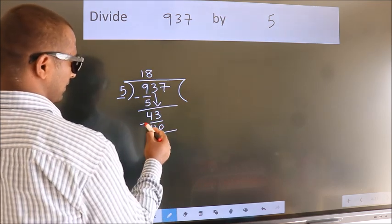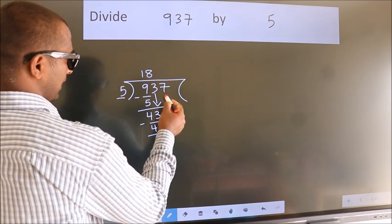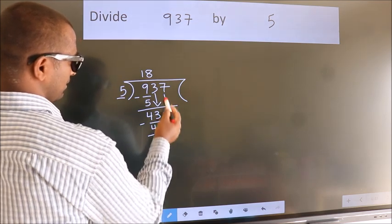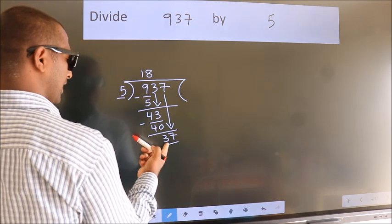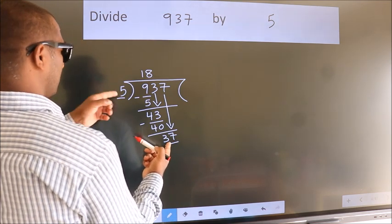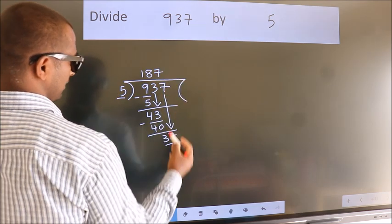Now we subtract, we get 3. After this, bring down the beside number, so 7 down, so 37. A number close to 37 in the 5 table is 5 times 7 is 35.